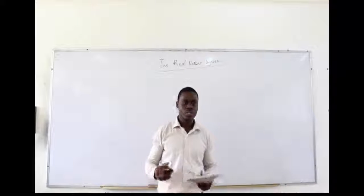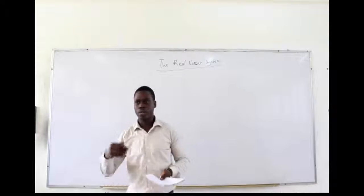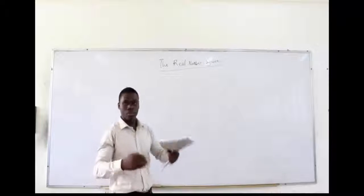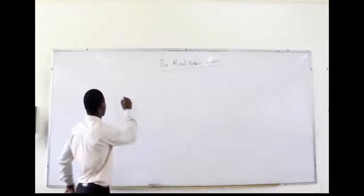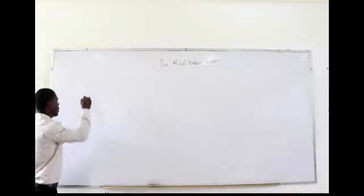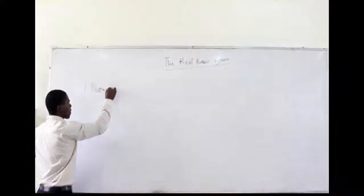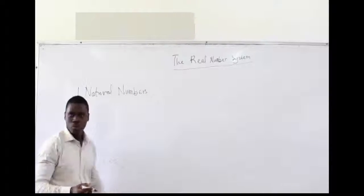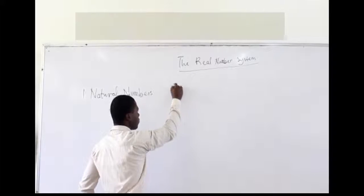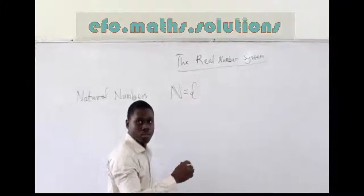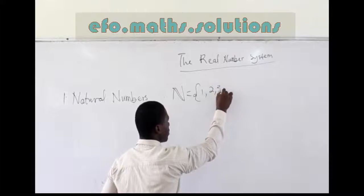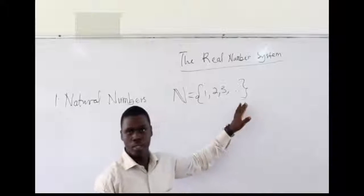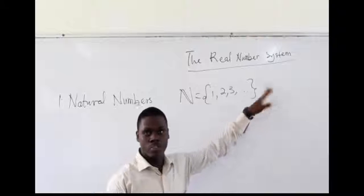Starting with counting the numbers of the animals — one, two, three — we came to accept this system of numbers which we call the natural numbers. So the first set of numbers we have are natural numbers, denoted with this symbol. We have one, two, three, and so on. The dots here tell us that these numbers continue into infinity.